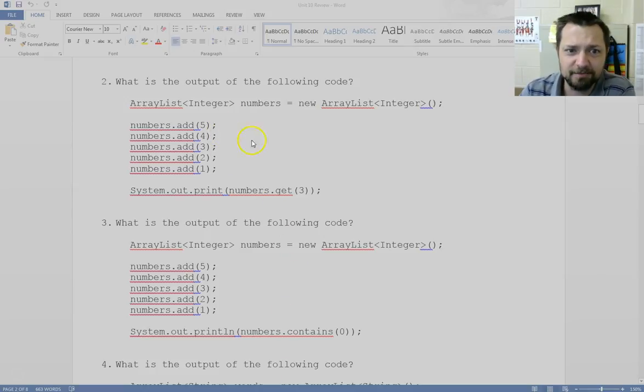Here we do the same thing. We add everything in order: 5, 4, 3, 2, 1. Access the thing at position 3. 0, 1, 2, 3. The answer should be a 2.